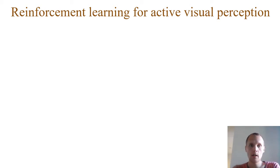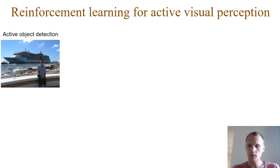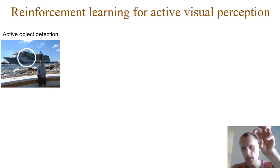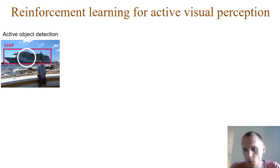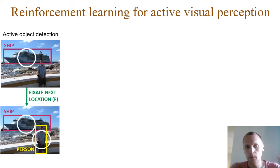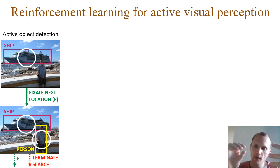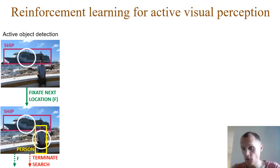These challenges drive the thesis forward — it revolves around improving upon or addressing weaknesses in typical perception pipelines. The thesis uses reinforcement learning for three perception tasks. For object detection, the proposed model is similar to the eye fixation video — a system that looks locally at different parts of the image, detects objects, then fixates somewhere else. In this example it detects a ship and a person in two different fixations, and the model decides where to look next or terminates the search.